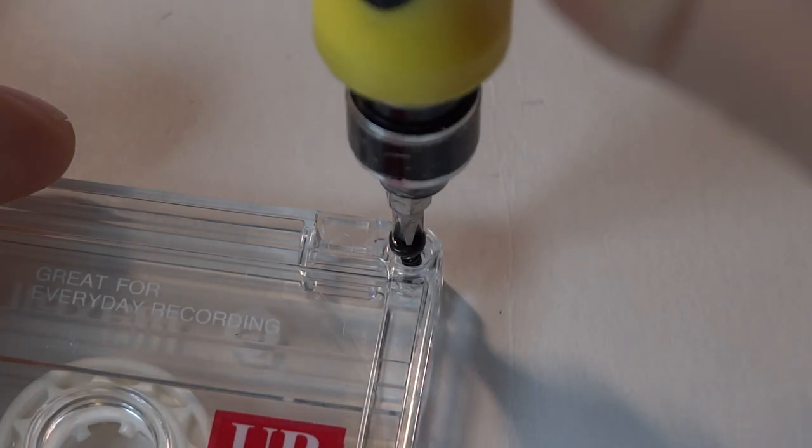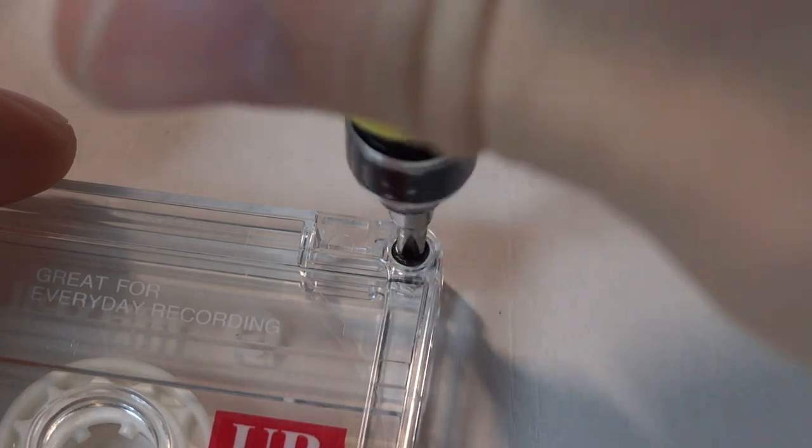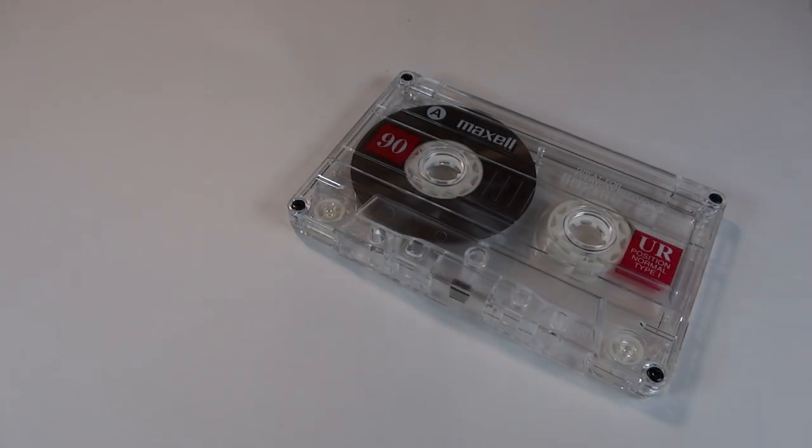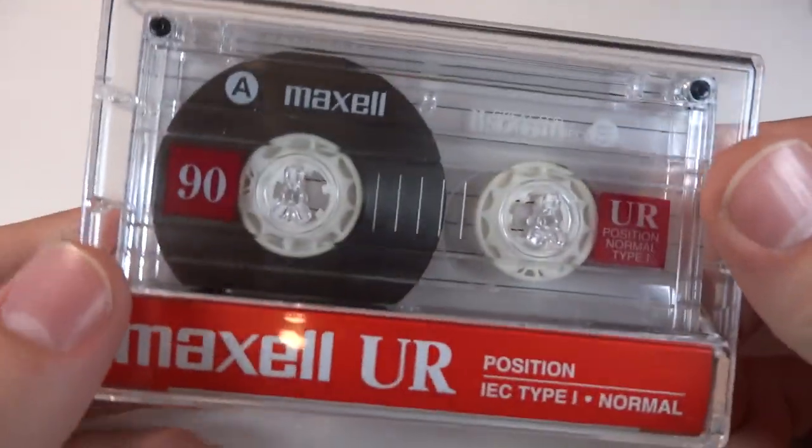Pro tip for reinstalling screws into plastic is to back-thread it first until you hear it click. Then when you screw it in, you don't run the risk of cross-threading it by accident. That's the cassette put back together. I'll revisit this later when I need it.